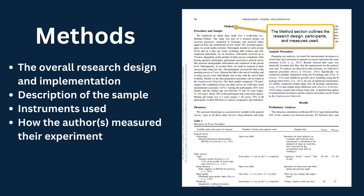Next, you have the Methods. The Methods section of an empirical research article will explain the overall research design, implementation, or approach, a description of the sample, the instruments used, and or how the authors measured their experiment.